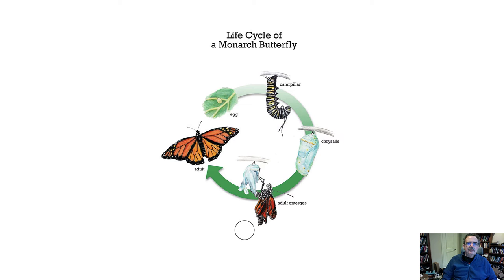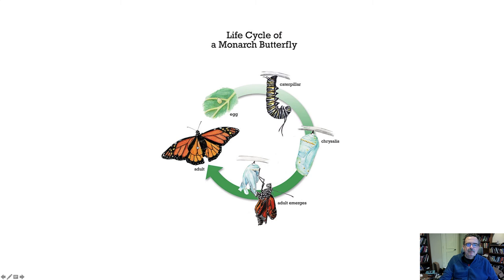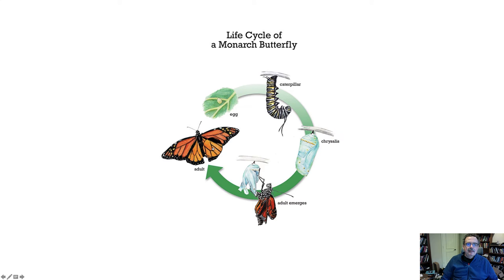Here are some examples. The life cycle of a monarch butterfly: you start with an egg phase, then the caterpillar phase — whenever you hear the word 'phase' or 'stage,' think 'state,' it's a condition in which something exists. After the caterpillar there's a chrysalis, which opens and an adult butterfly emerges. Life cycles of many living things, including ecosystem cycles, are essentially examples of finite state machines.